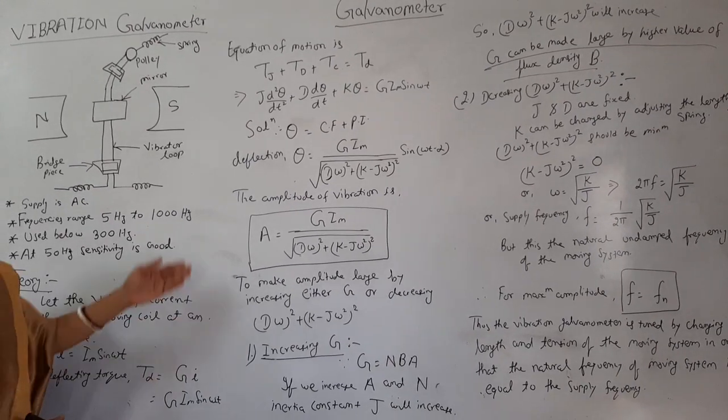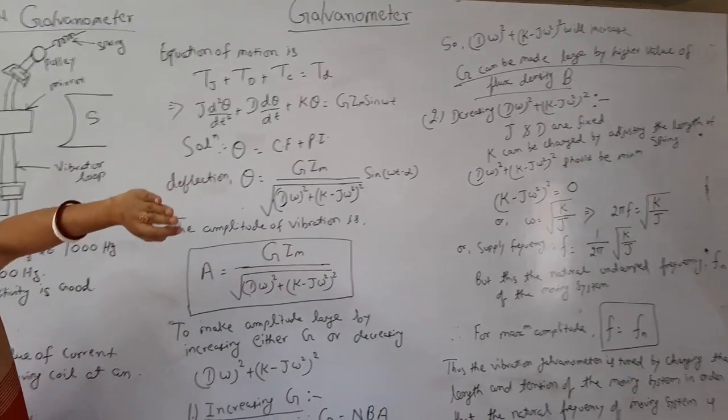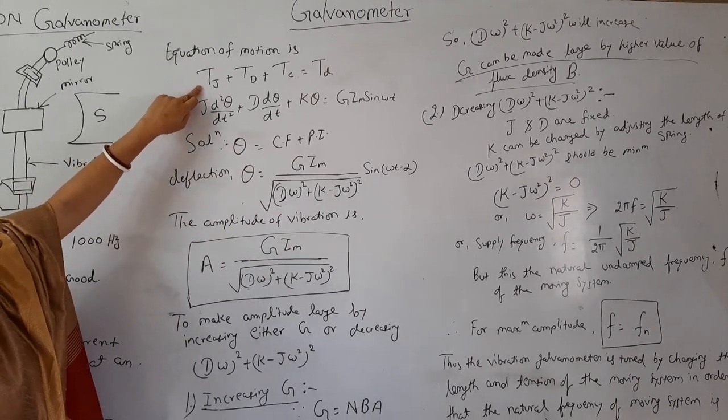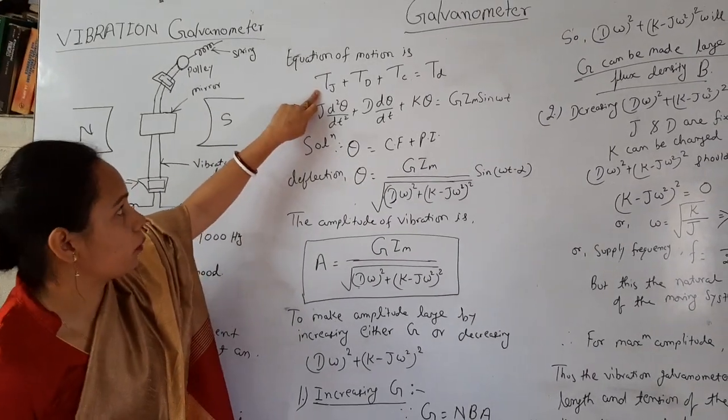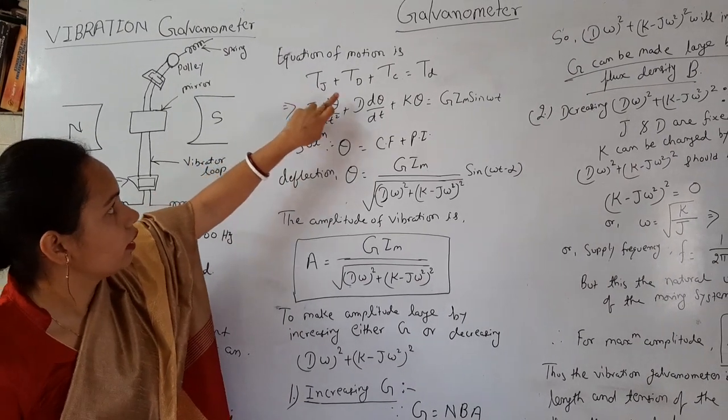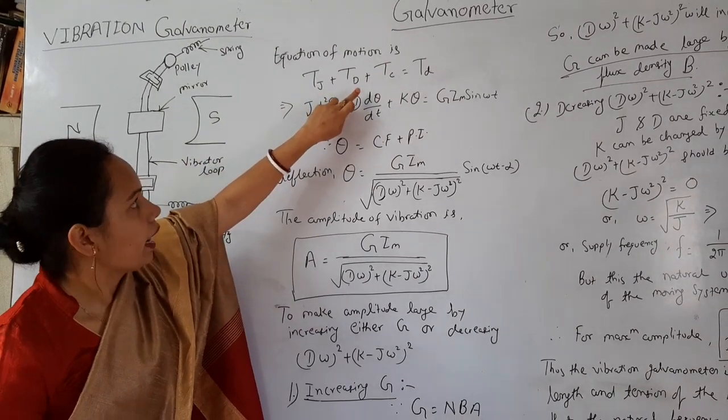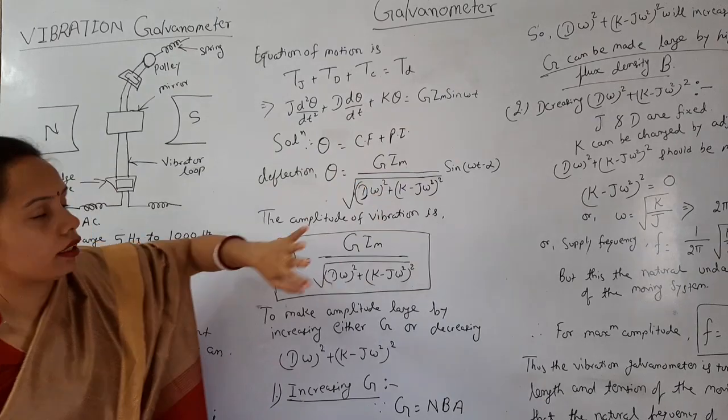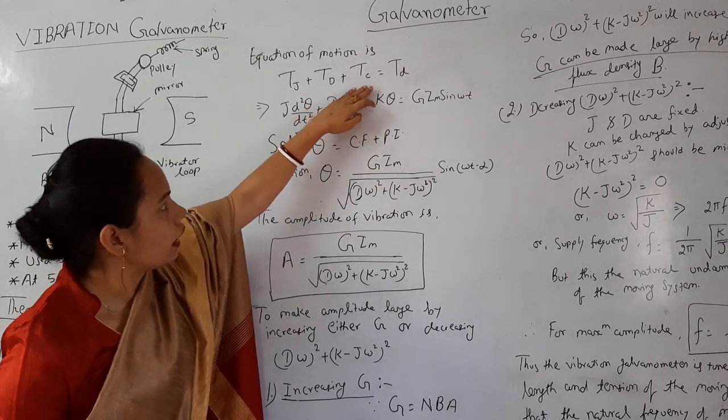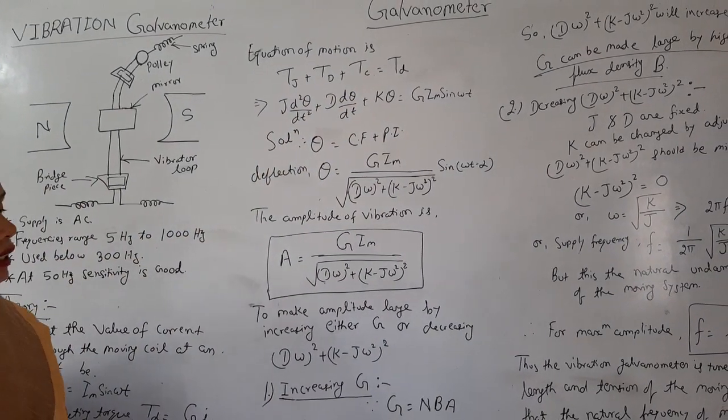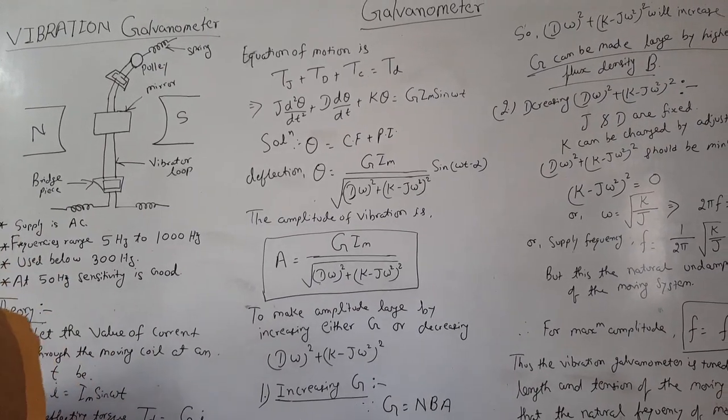So equation of motion is also discussed in the previous lecture. Torque due to moment of inertia, torque due to damping, and torque due to spring controlling torque are all equal to the deflecting torque, so that a stable operation can be achieved.